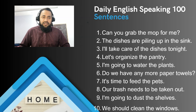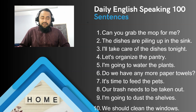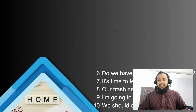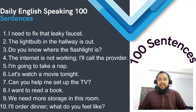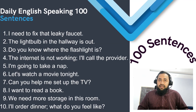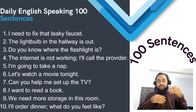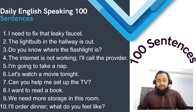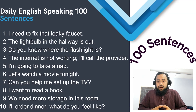'We should clean the windows' — if your windows are not looking clear. These sentences are used at home on a regular daily basis. Next: 'I need to fix that leaky faucet' — the faucet means the tap, in the kitchen or washroom that is leaking. 'The light bulb in the hallway is out' — if the bulb is gone, you fix it. 'Do you know where the flashlight is?' — if the flashlight is missing, you ask someone nearby.